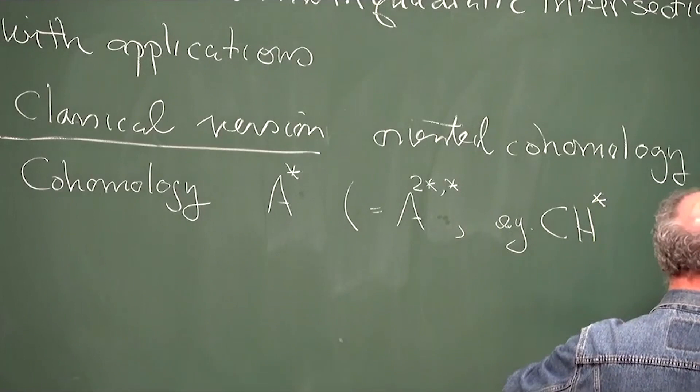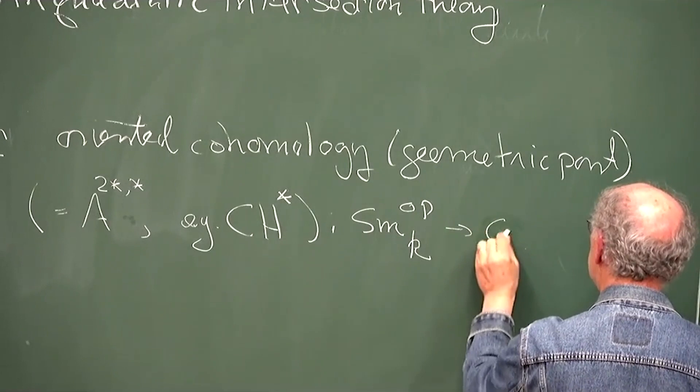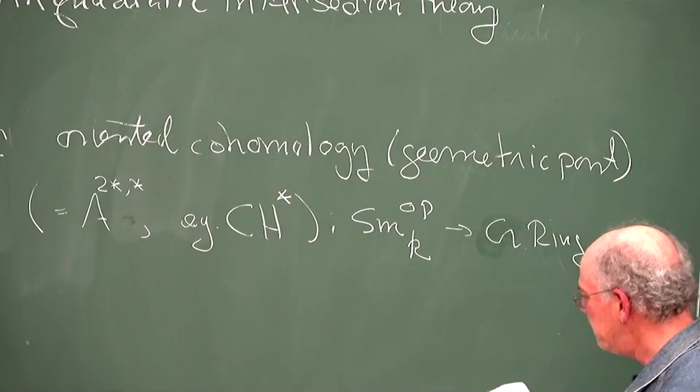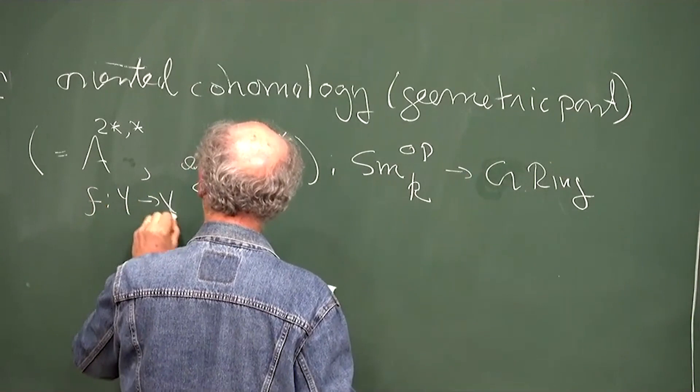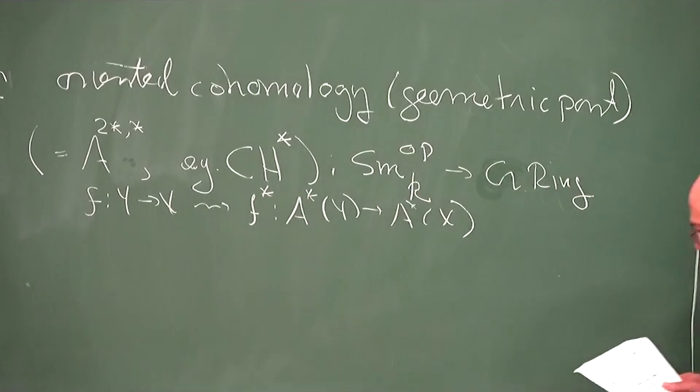We should view this as a functor, just from smooth things over our fixed base field K to graded rings — commutative graded rings, not graded-commutative; there are no signs involved. So if you have a map from Y to X, then you get the pullback map, a homomorphism of graded rings.